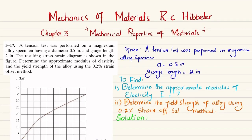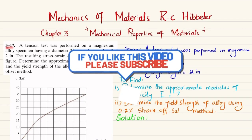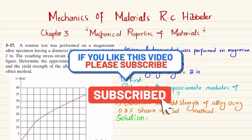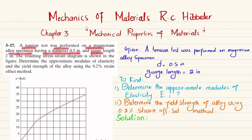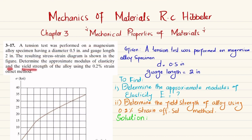Welcome back. Problem 3-17 is taken from chapter 3, Mechanical Properties of Materials, from the book Mechanics of Material by R.C. Hibbeler. The problem statement: a tension test was performed on a magnesium alloy specimen having a diameter of 0.5 inch and gauge length 2 inch. The resulting stress-strain diagram is shown. Determine the approximate modulus of elasticity and the yield strength using the 0.2 percent strain offset method.